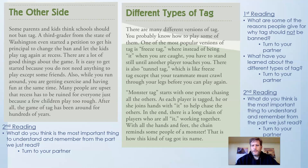Different Types of Tag. There are many different versions of tag — you probably know how to play some of them. One of the most popular versions is freeze tag, where instead of being it, when you are caught, you have to stand still until another player touches you. There is also tunnel tag, which is like freeze tag except that your teammates must crawl through your legs before you can play again. Monster tag starts with one person chasing all the others. As each player is tagged, he or she joins hands with it to help chase the others. In the end, there is a long chain of players who are all it working together. With all the hands and feet, the chain reminds some people of a monster — that is how this kind of tag got its name.